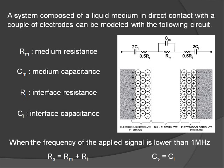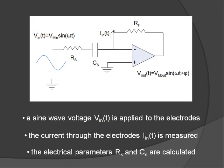When the frequency of the test signal applied to the electrodes is relatively low, the bulk capacitive component is negligible, and the system can be modeled as the series of a resistance and a capacitance. The resistive and capacitive components of the impedance, R-S and C-S, can be measured using the circuit presented in the figure. A sinusoidal test signal is applied to the electrodes and the current through the electrodes is converted to a voltage by means of the operational amplifier feedback resistor. The electrical parameters can be estimated by analysis of both the input and output sine wave signals.